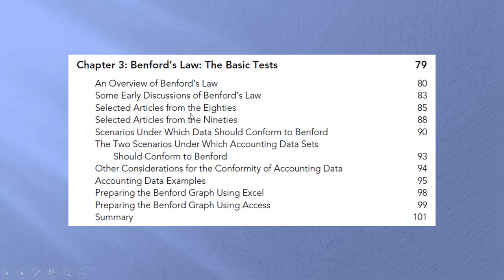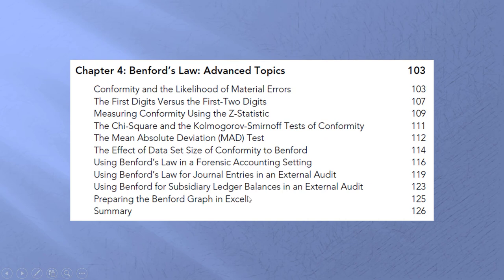This chapter talks about the early literature, some of the theory behind Benford's Law, and some examples. You can see that we're demonstrating things using Excel and Access — lots of screenshots, lots of software demonstrations. The advanced tests cover how we measure whether a set of data actually conforms to Benford's Law or not. I also talk about exactly how we can use Benford's Law on accounting data — journal entries and subsidiary ledger balances — with some interesting cases throughout.